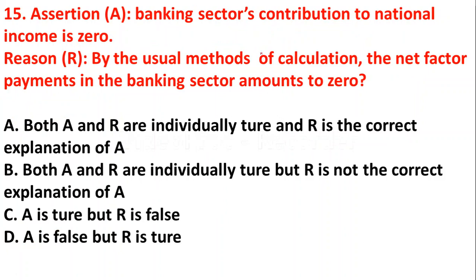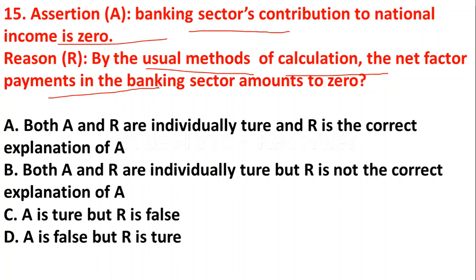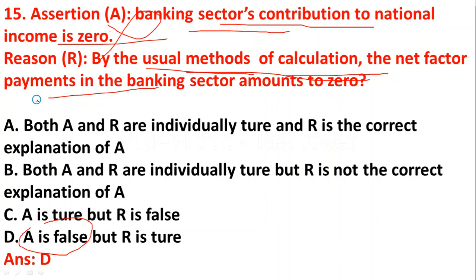Question 15 — Assertion and Reasoning: Assertion is banking sector's contribution to national income is zero. Reason is by the usual method of calculation the net factor payment in the banking sector amounts to zero. Here the assertion is false — banking sector's contribution to national income is not zero. However, the reason is correct: by the usual methods of calculation, the net factor payment in the banking sector amounts to zero. So the assertion is false but the reason is true.